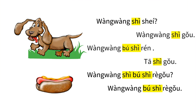汪汪是谁? Who is 汪汪? 汪汪是狗。 汪汪 is a dog. 汪汪不是人。 汪汪 is not a person. 他是狗。 It's a dog. 汪汪是不是热狗? Is 汪汪 a hot dog? 汪汪不是热狗。 汪汪 is not a hot dog.